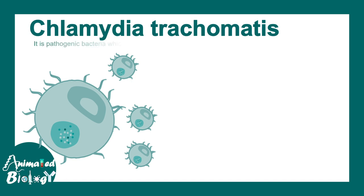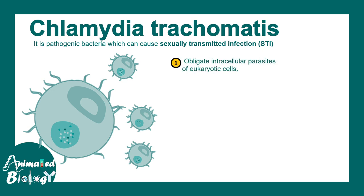Chlamydia trachomatis is a bacteria well known for sexually transmitted infection. It is an obligate intracellular parasite of eukaryotic cells. They cannot make their own ATP and that's why they are dependent on host cells.